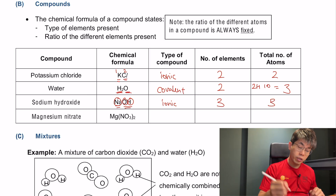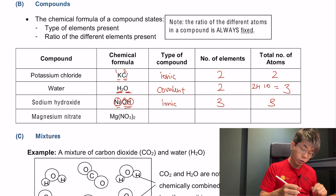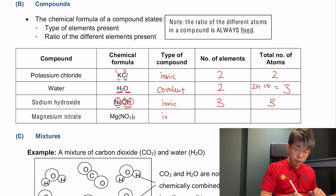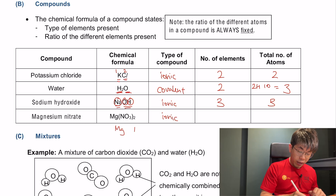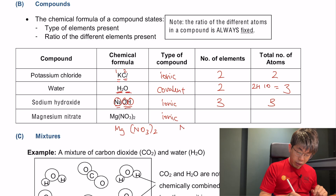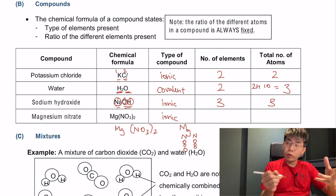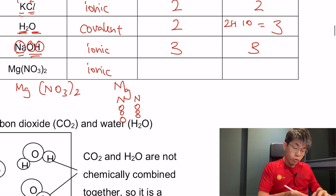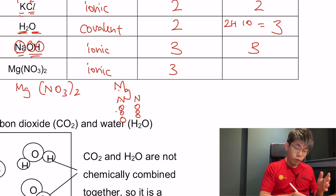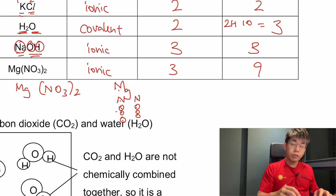Magnesium nitrate, Mg(NO3)2, looks more complicated. It has metals and non-metals so it is ionic. We have one magnesium, and then NO3 appears twice. So we have magnesium, nitrogen, and three oxygens times two — giving us three different types of elements but a total of nine atoms: one magnesium, two nitrogens, and six oxygens.